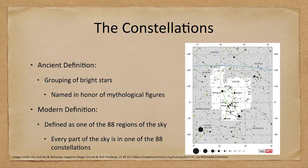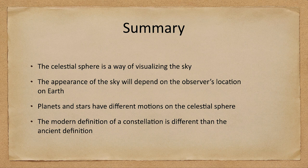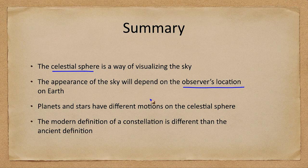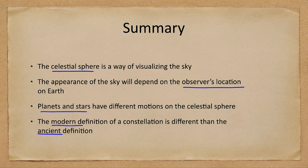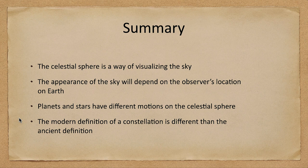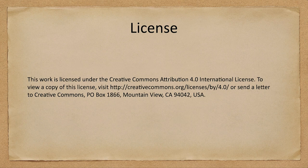So let's finish up this section with our summary. We've looked at the celestial sphere as a way of observing the sky. The appearance will be different depending on where you are on Earth. The stars move together as a group, whereas the planets tend to wander through the stars. We looked at the modern and ancient definitions of a constellation and how that has changed. That concludes this lecture on the celestial sphere. We'll be back next time for another topic in astronomy — until then, have a great day everyone, and I will see you in class.